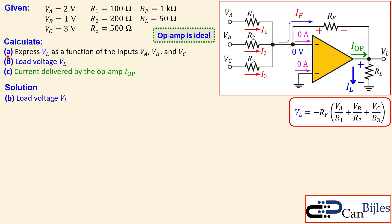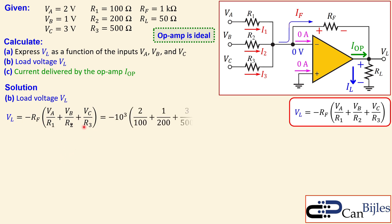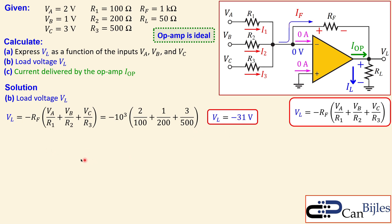For question B, the actual load voltage: substituting the values - Rf = 1 kilo-ohm, and the input voltages and resistors into the expression - 2 over 100, 1 over 200, and 3 over 500 - doing the math gives VL = minus 31 volts. It is negative because all input voltages are positive and this is an inverting summing amplifier, so the result must be negative.